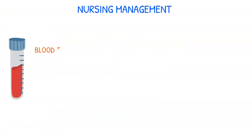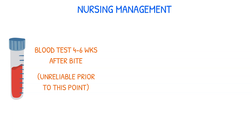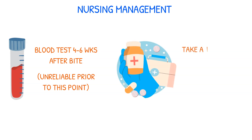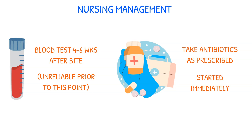Four to six weeks after a bite, a blood test should be performed to detect for the presence of the disease. Testing before this point is unreliable since the tests are meant to detect antibodies, which might take several weeks to develop. Give the patient instructions on how to take their antibiotics as prescribed, which are started right away. With a few weeks of antibiotics, the majority of Lyme disease cases are effectively treated.